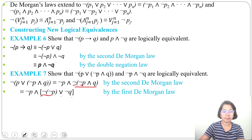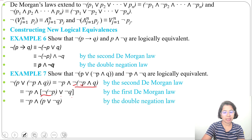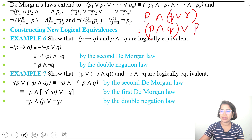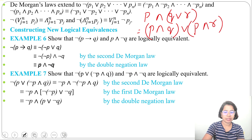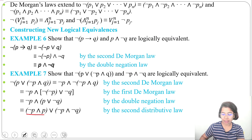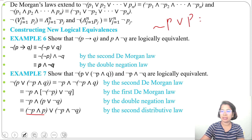By double negation law, negation of negation p becomes p. So we now have (negation p) and (p or negation q). Applying the distributive law — since p and (q or r) equals (p and q) or (p and r) — we can write this as (negation p and p) or (negation p and negation q). By the negation law, (negation p and p) is false, since (negation p or p) is true but (negation p and p) is false.